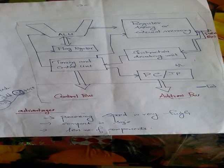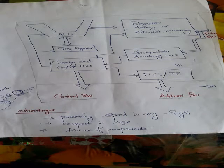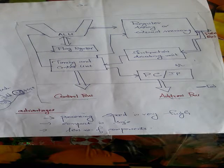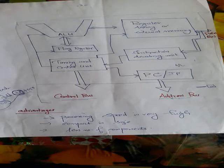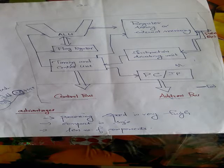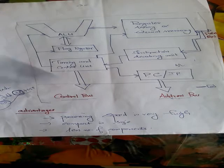Now going on to the basic components of a microprocessor. The basic components include the arithmetic and logical unit, the flag register, the timing and control unit, the register array or internal memory, the instruction decoding unit, and the program counter or instruction pointer.